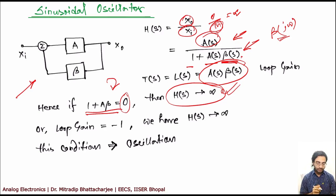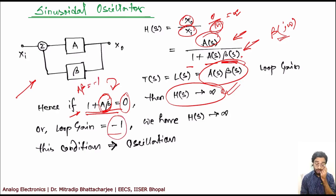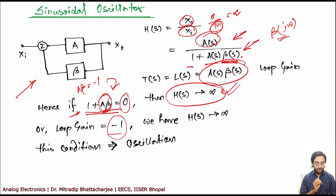This leads to the condition that Aβ should be equal to minus 1 — meaning your loop gain should be minus 1. This is one condition for an oscillator.